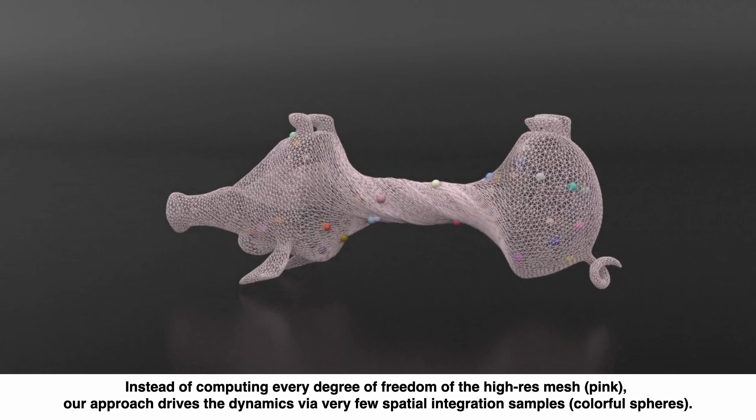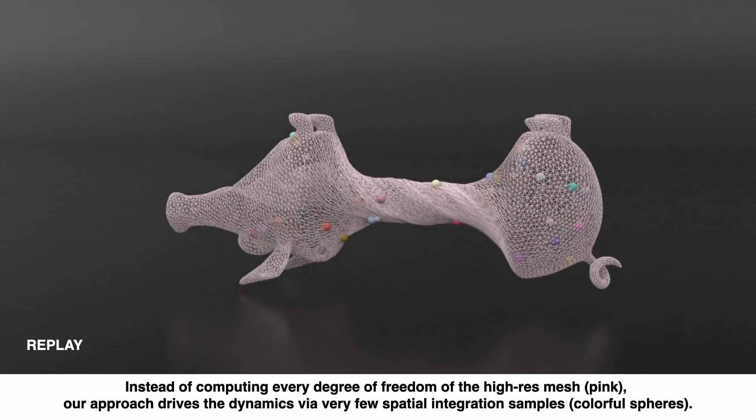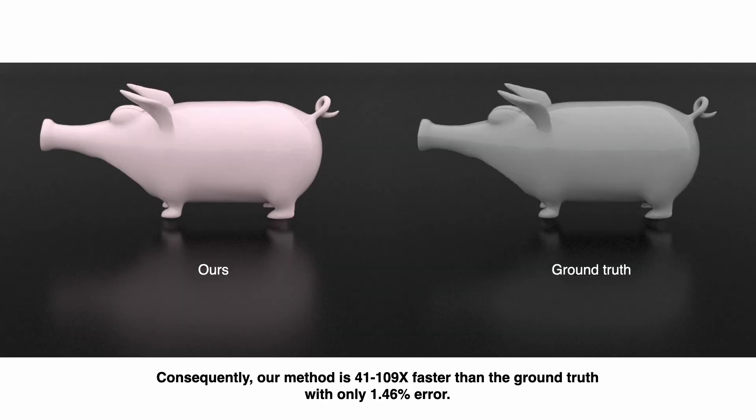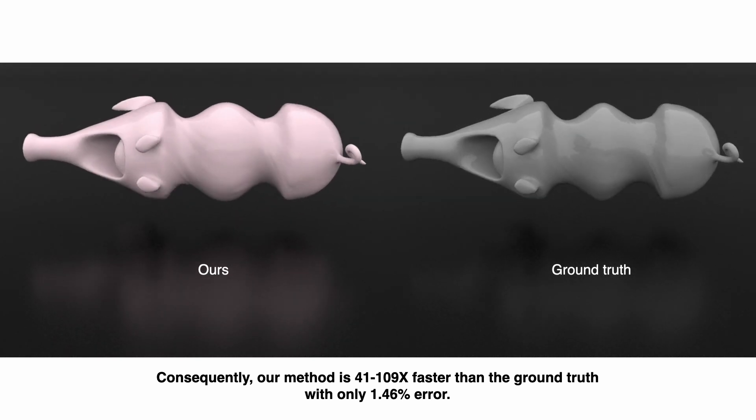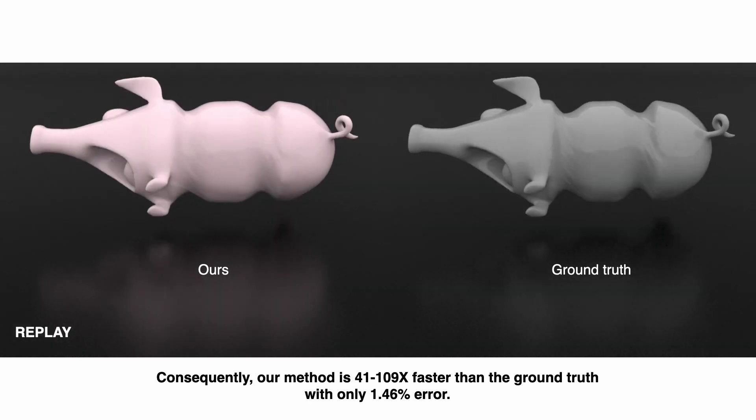For a high resolution mesh, shown here in pink, our approach drives the dynamics via only a few samples, the sparse, colorful spheres. Courtesy of reducing dimension, our method is 41 to 109 times faster than the ground truth simulation, with only 1.46% of the error.